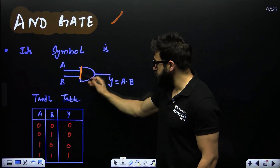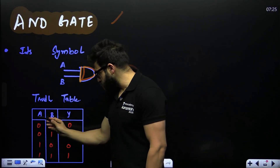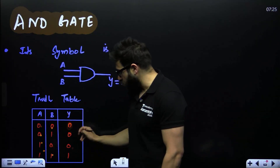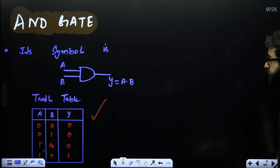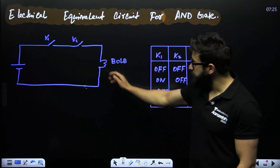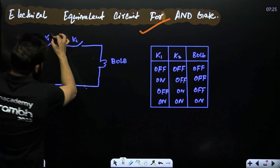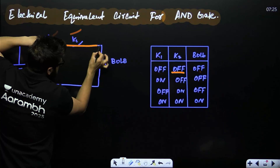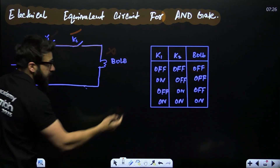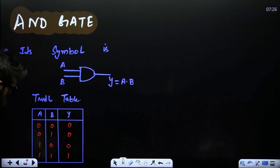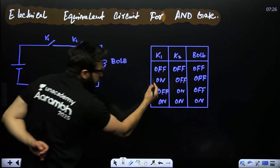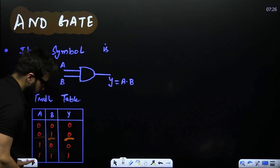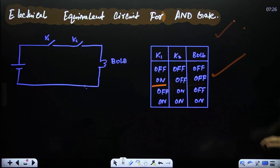For the AND gate — this is its symbol — its job is to do multiplication, so Y = A · B. Truth table: zero into zero is zero, zero into one is zero, one into zero is zero, one into one is one. The electrical equivalent circuit has key one and key two in series with a bulb. If both keys are off, current cannot pass through — bulb remains off (zero zero → zero). If one is on and the other off, current still cannot pass — bulb remains off. This circuit exactly behaves like an AND gate.